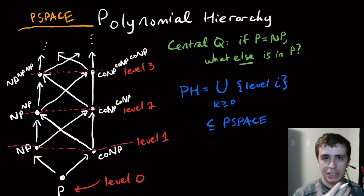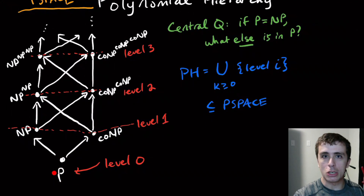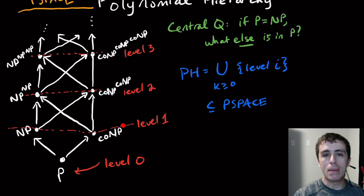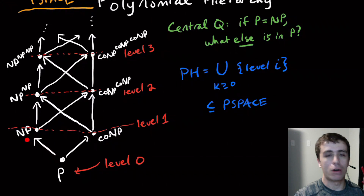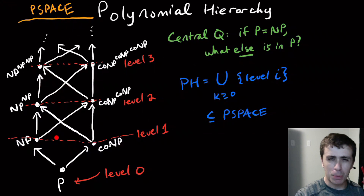So the hierarchy is this big diagram on the left. What is this diagram actually showing? We have P down here — that's the usual deterministic polytime. We have NP right here — that's just normal NP — and co-NP, which is the set of languages whose complements are in NP.